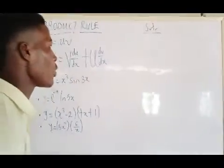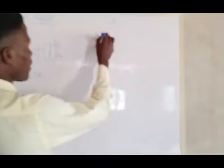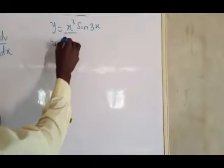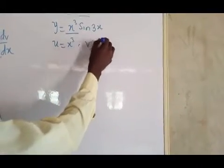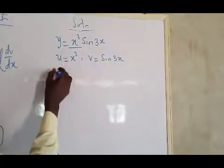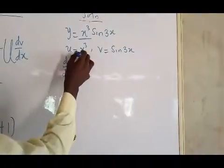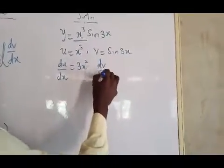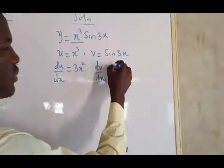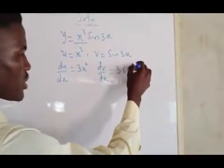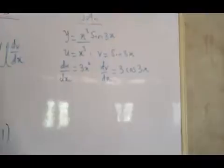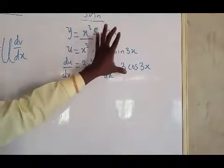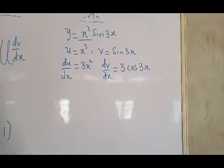The first question says y equals x³ sin(3x). Here your u is x³ and your v is sin(3x). So du/dx — differentiating x³ — gives you 3x². Then dv/dx — differentiating sin(3x) — gives you 3cos(3x). If you don't get how I did this, it is using the chain rule. Watch the chain rule video to understand how I got 3cos(3x).